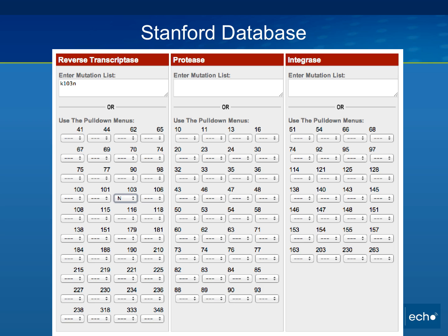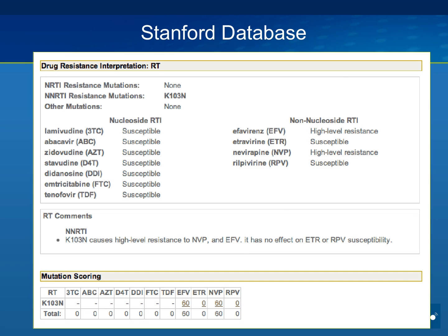On the upper left, you can type in your reverse transcriptase mutations or use the pull-down menu. What I've done here is put in a K103N — alternatively, you can go to the pull-down menu and at position 103, click N. There's also a spot for protease mutations or integrase mutations. Once you do that, you get an interpretation showing susceptible or resistant, comments about the mutations, and a mutation score or penalty score at the bottom.